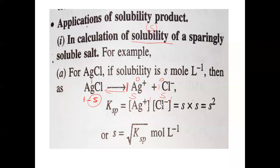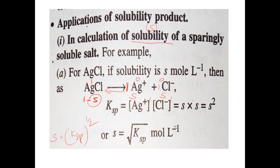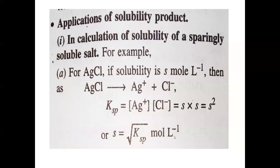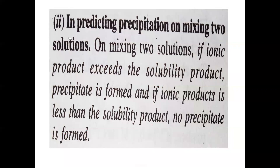So Ksp = [Ag⁺][Cl⁻] = S × S = S². Therefore S = √Ksp, i.e., S = Ksp^(1/2). If you know the Ksp value, you can find the solubility in moles per liter. If grams per liter is required, multiply moles by the molar mass.